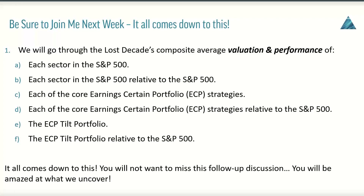Be sure to join me next week. We're going to look at the lost decade's composite averages of valuation and performance — each sector in the S&P 500 relative to the S&P 500. Then we'll look at each of the core earnings-certain portfolio strategies: the Core 75, the Admiral 30, and the 25-stock dividend strategy, examining how each performed on a composite average basis relative to the S&P 500. We'll also look at the ECP tilt portfolio's valuation and performance over the lost decade. It's going to be a really nice, easy-to-digest wrap-up next week.